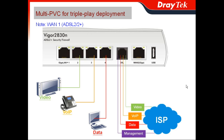So what kinds of demands do they normally have for triple-play? For example, they would have only one single DSL connection, but they need to separate four kinds of services, including video for IPTV, voice over IP, data for internet connection, and a management channel for ISP use.